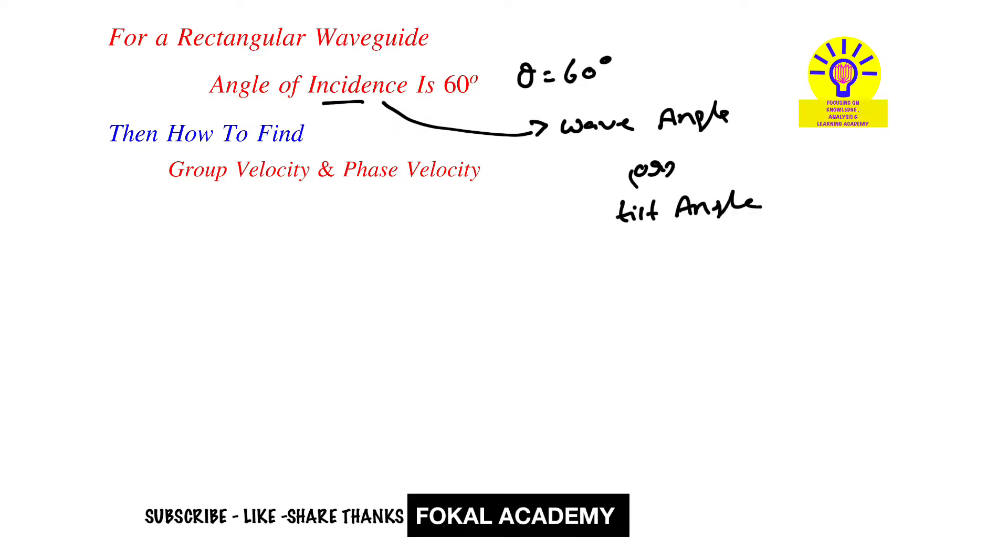Now, how to find group velocity and phase velocity? First, understand what is group velocity. Group velocity is the velocity at which a group of waves travel, and it is abbreviated as vg.